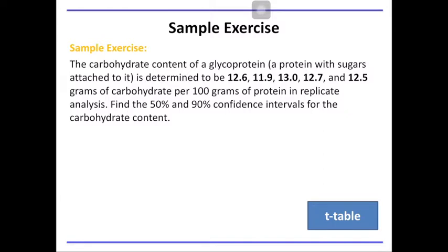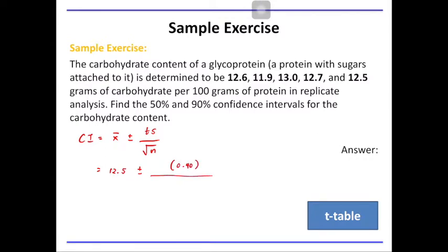A sample exercise is provided here. The carbohydrate content of a glycoprotein — a protein with sugars attached — is determined to be these values in grams of carbohydrate per 100 grams of protein in replicate analysis. Find the 50% and 90% confidence intervals for the carbohydrate content. The formula for confidence interval is mean plus or minus t times standard deviation over square root of n. If we calculate the mean for these measurements, we get a mean value of 12.5 and standard deviation of 0.4. The number of measurements is 5, so we use square root of 5.